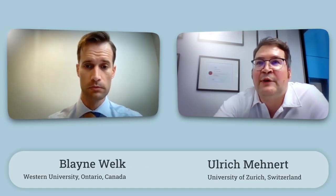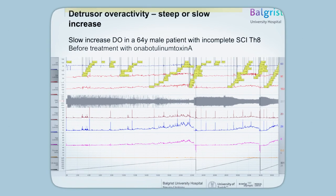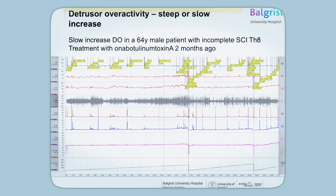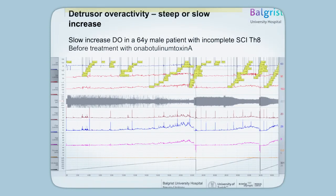I show a 64-year-old patient with an incomplete spinal cord injury below thoracic level 8. Here you see the urodynamic traces before and two months after botulinum toxin injections with 200 units of Botox.